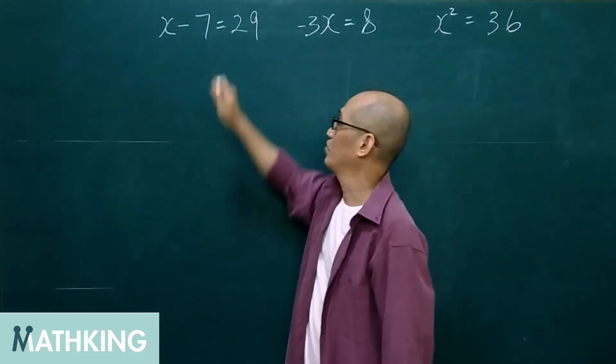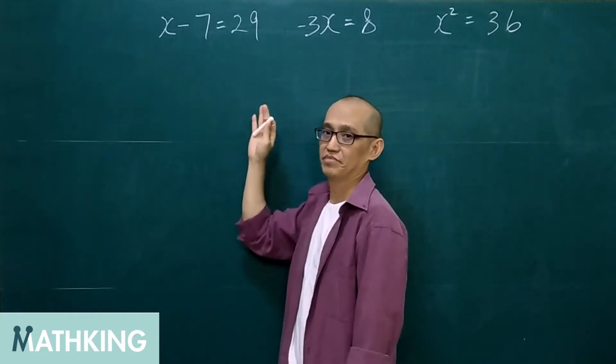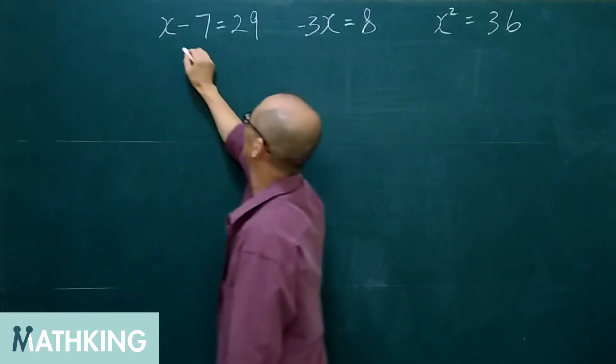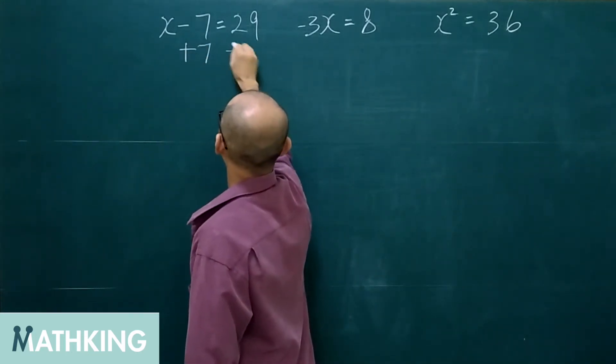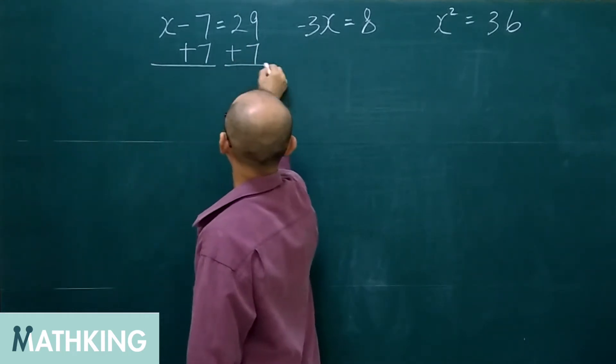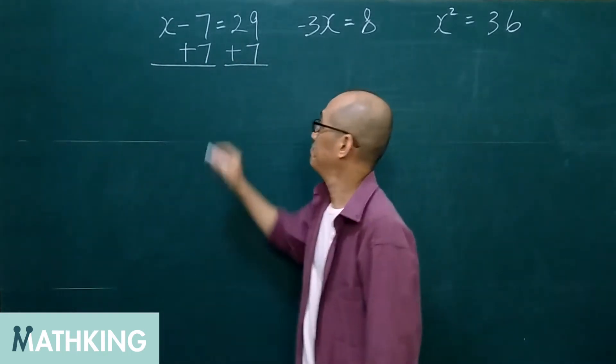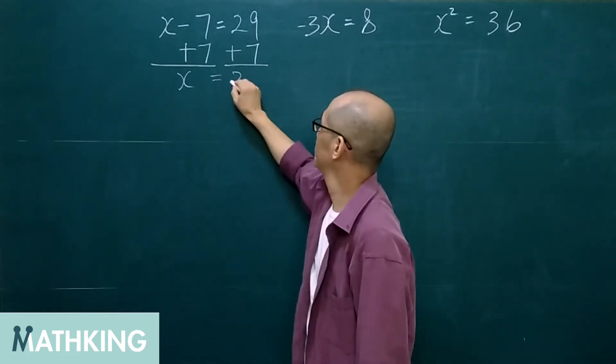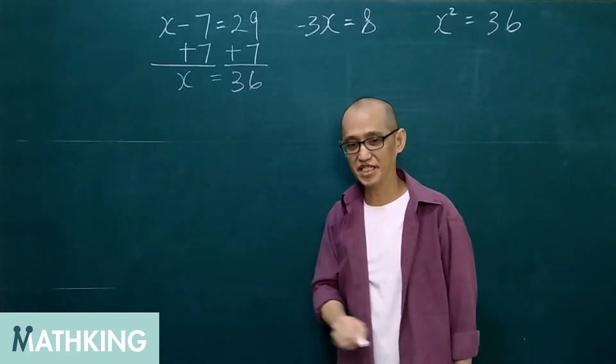For this one, we are going to add 7 to both sides. And we get x equals 36.